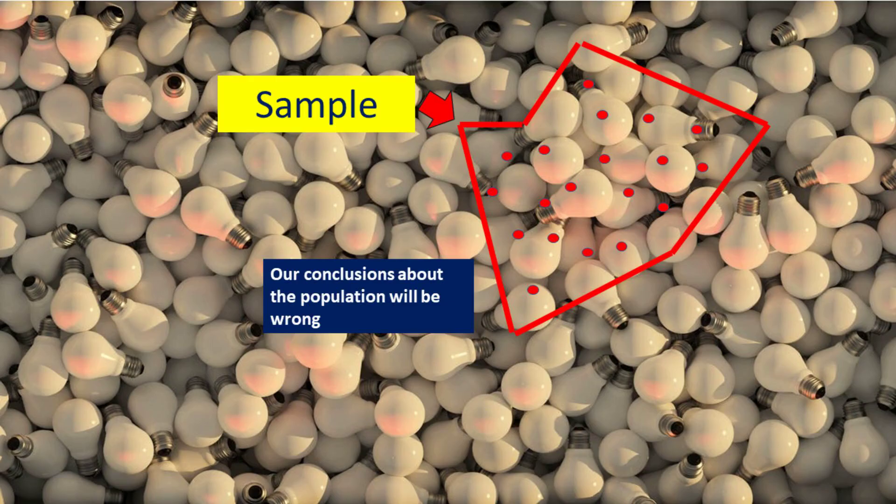As we all know, a sample is a subset of a population. When we talk about samples and populations, we are essentially discussing the process of generalizing findings from a smaller group, the sample, to a larger group, the population. It is important to recognize that the relationship between samples and populations is not always straightforward. There are various factors to consider, such as sample size, representativeness, and sampling methods, that can significantly influence the accuracy of our conclusions.